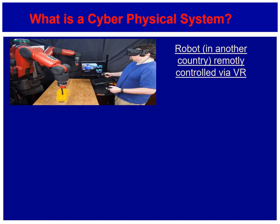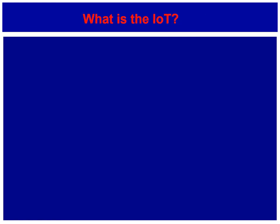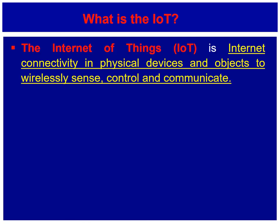What's an example of a cyber-physical system? Imagine someone moving a robot in another country remotely controlled via virtual reality. The operator uses a virtual reality headset and via a cell phone communicates with a cell tower, reaching the internet via the core network and being transmitted to another country by a Wi-Fi access point, controlling that robot. The Internet of Things is Internet connectivity in physical devices and objects that wirelessly sense, control, and communicate.